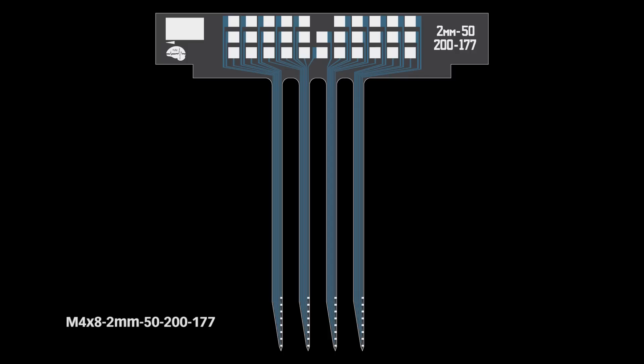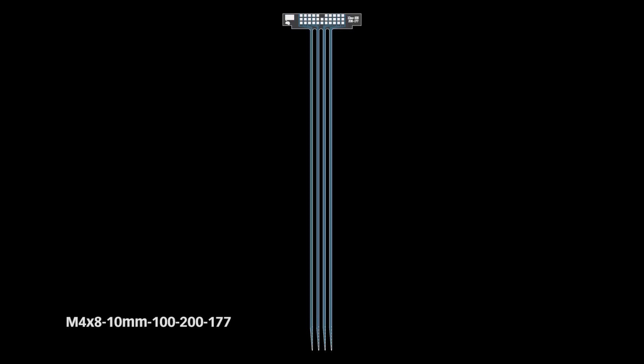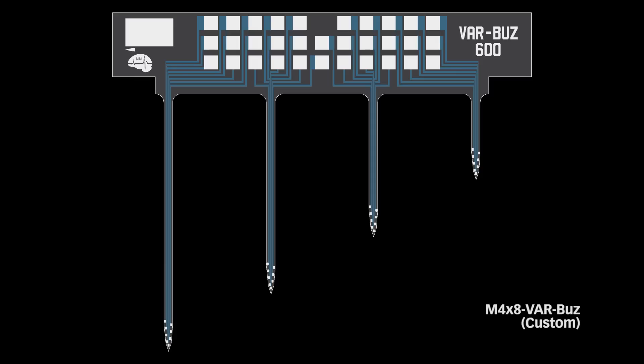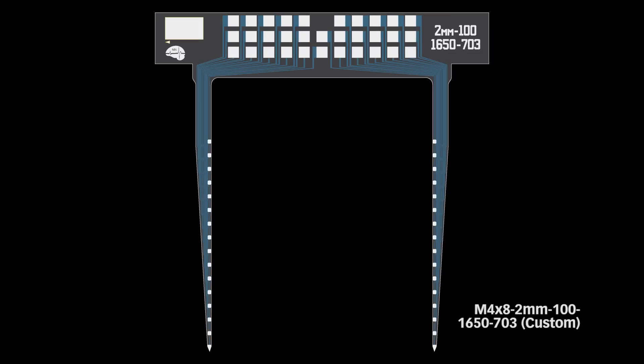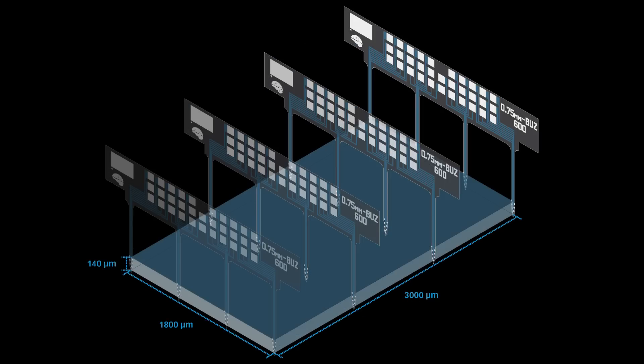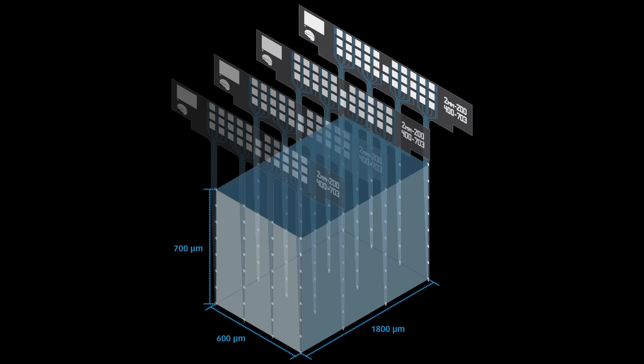Precisely spaced 2D silicon arrays make up the building blocks of the Matrix Array. Choose from standard assemblies or customize any aspect of your probe. Either option provides exact electrode site positioning in 3D space.